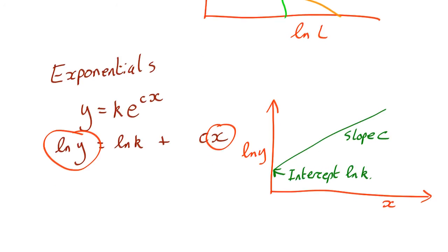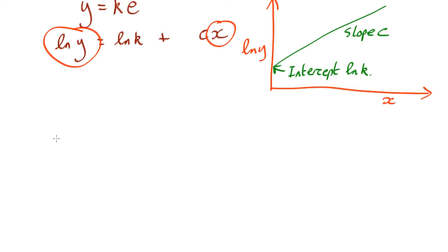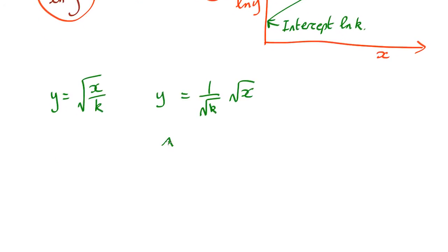That doesn't always have to involve logs. Let's say, for example, Y equals root X over K. In this case, you can just plot Y against root X. So, that's 1 over root K. So, if you plot Y against root X, you should have a line of slope 1 over root K.